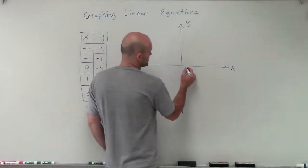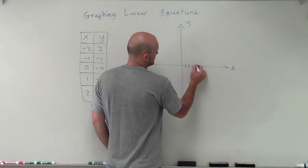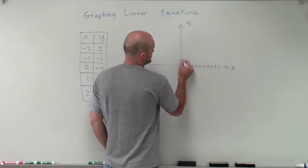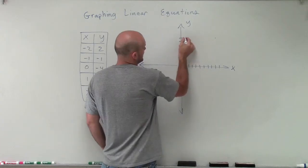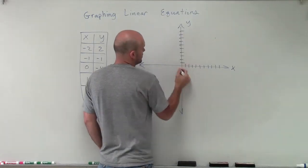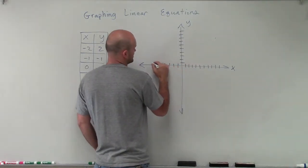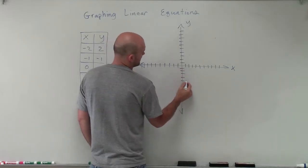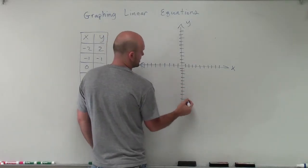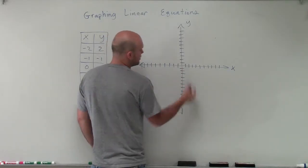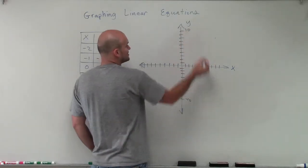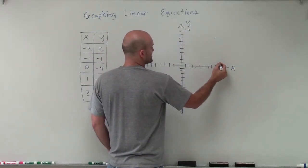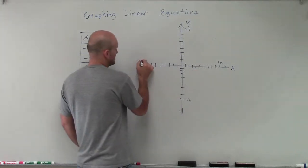So let's go ahead and count out 1 through 10 on all four sides of the axes. Remember, when going down that's negative, going up it's positive, to the right is positive, and to the left is negative.